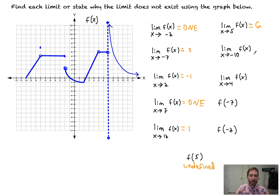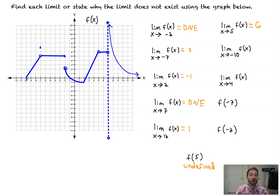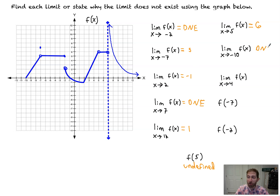The limit as x approaches negative 10 of f(x) — this is a tricky one. There is nothing to approach from the left side; you have no curve on which to travel. You can approach from the right-hand side and get 0, but from the left there is no track, so that limit does not exist.